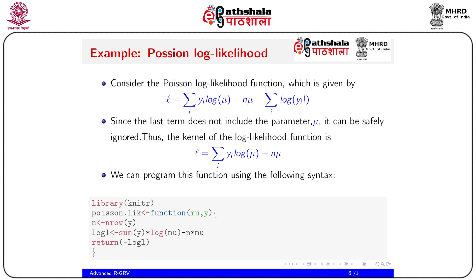Let's start with a Poisson example. Consider the Poisson log likelihood function: l = sum(yi * log(mu)) - n*mu - sum(log(yi!)). Since the last term does not include the parameter mu, it can be safely ignored. Thus the kernel of the log likelihood function is: l = sum(yi * log(mu)) - n*mu.